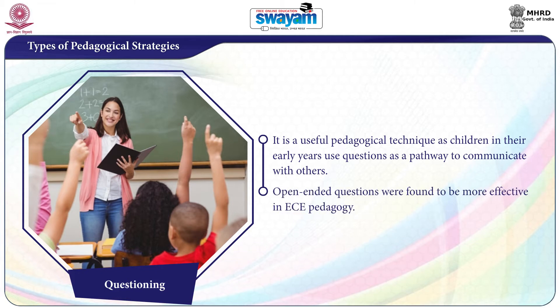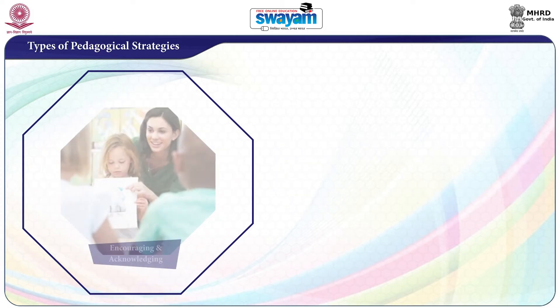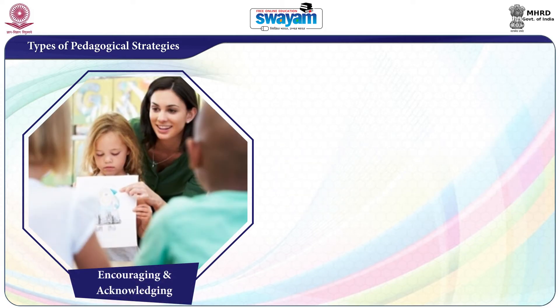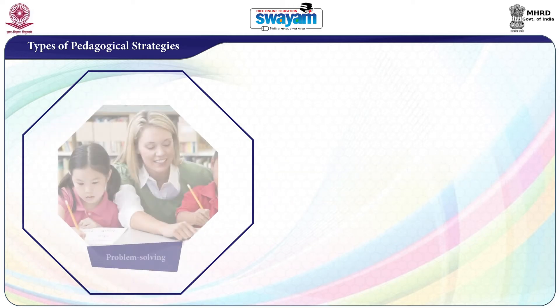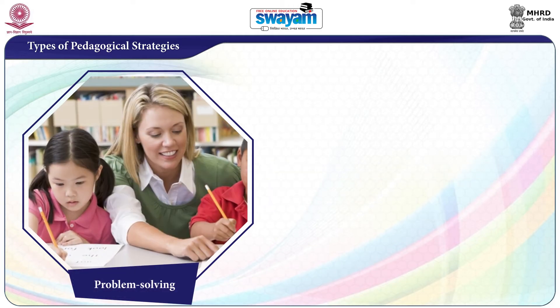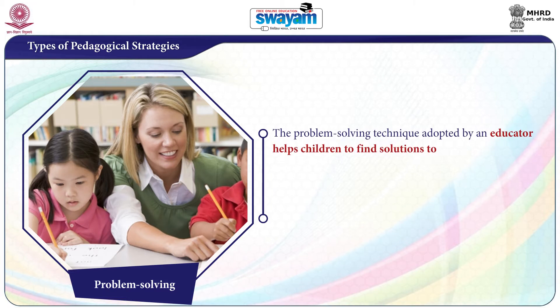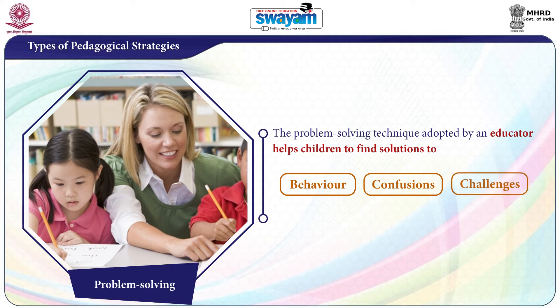Open-ended questions would be more effective in ECE pedagogy. Strategy 7 is Encouraging and Acknowledging — a process of providing positive verbal or non-verbal attention to the child, thereby enhancing the child's self-esteem. Strategy 8 is Problem Solving — the problem-solving technique adopted by an educator helps children to find solutions to day-to-day problems, confusions, and challenges that they face.